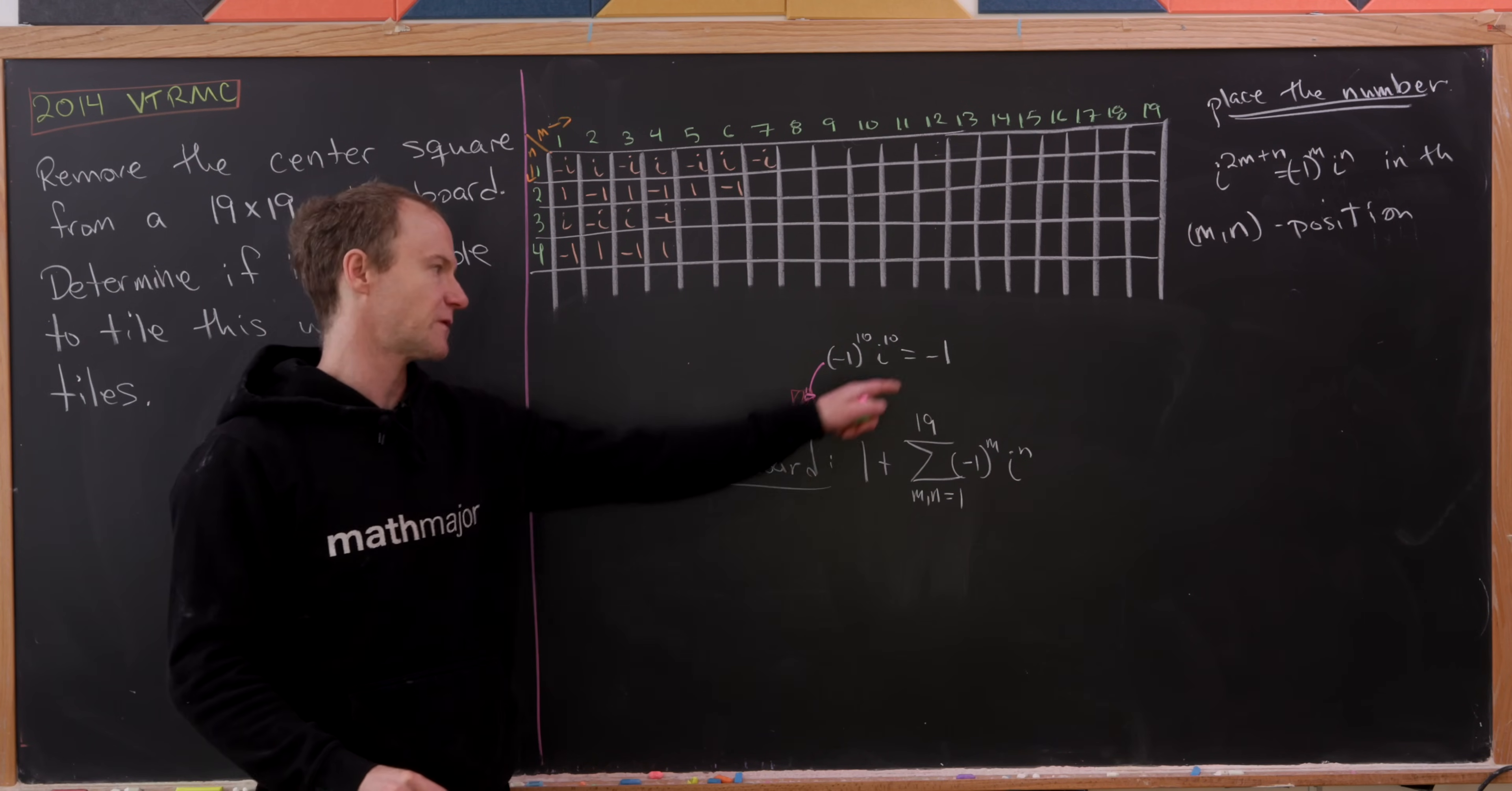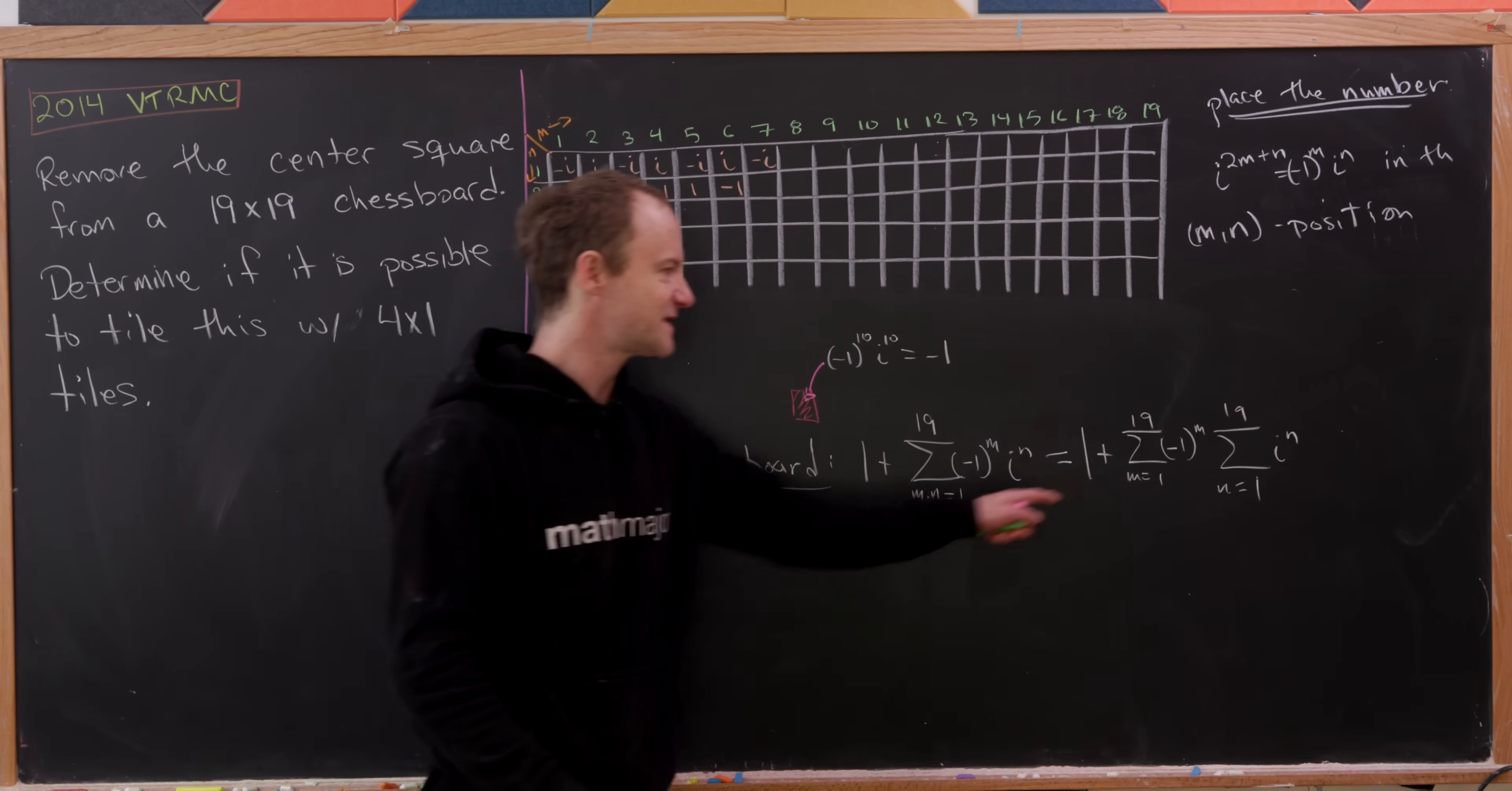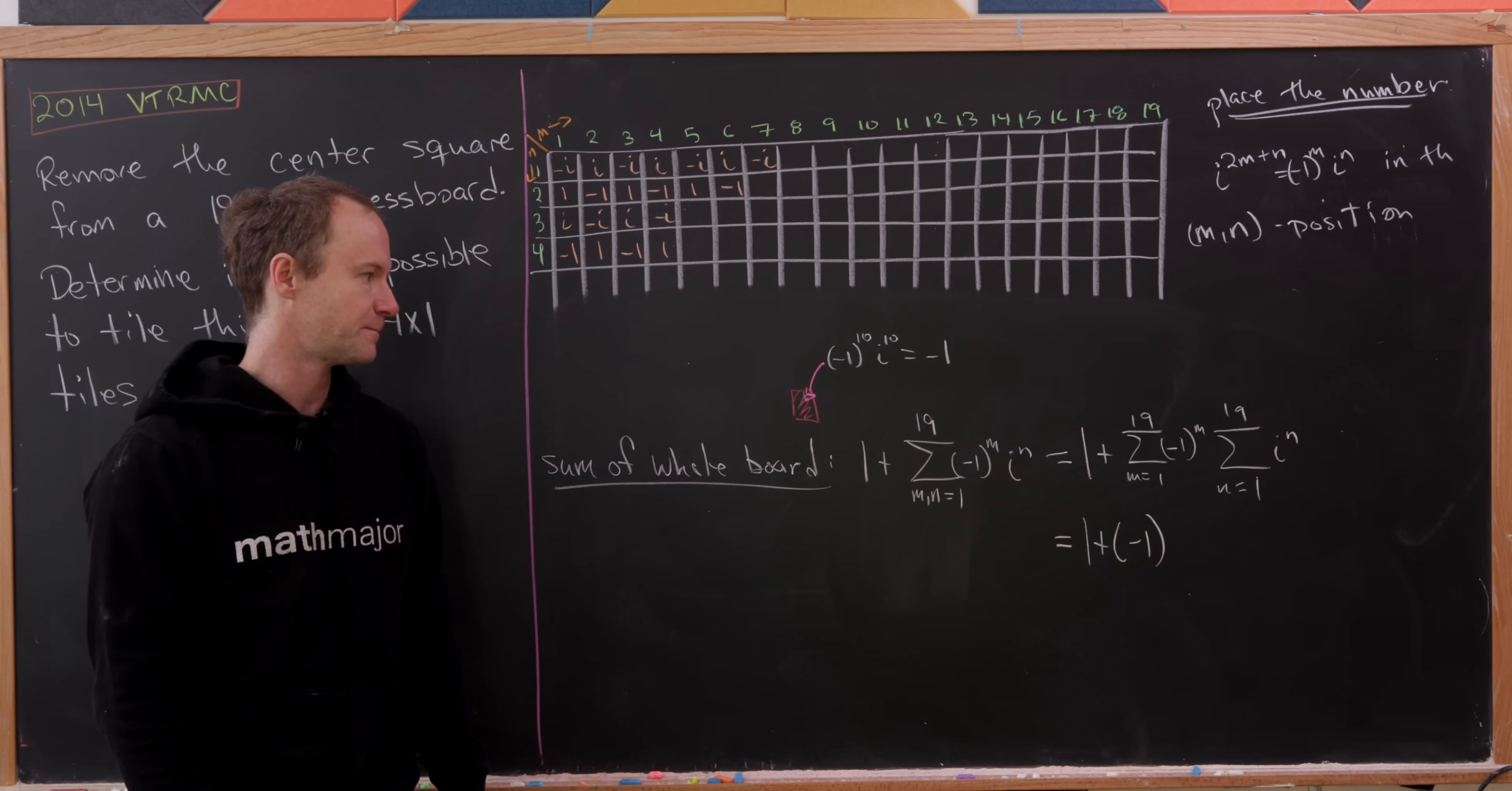And then this 1 plus out front is just from subtracting the minus 1 like we said before. But now let's observe that this is a pretty simple calculation. Since this is a product of an m sequence and an n sequence, we can factor this sum as the sum as m goes from 1 to 19 of minus 1 to the m times the sum as n goes from 1 to 19 of i to the n. But then, of course, this is pretty easy to sum because all of these terms will cancel each other in pairs.